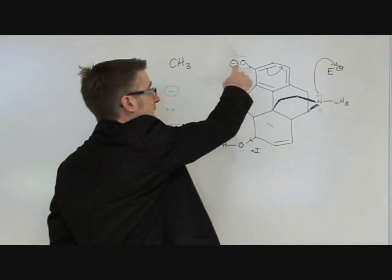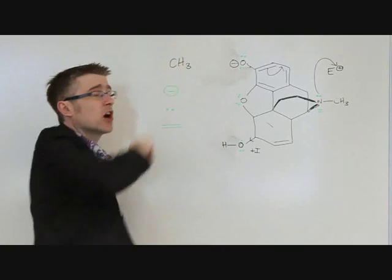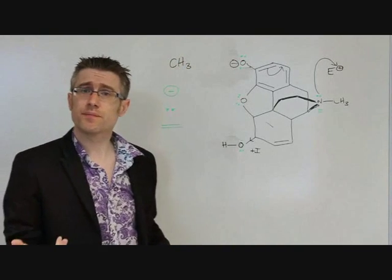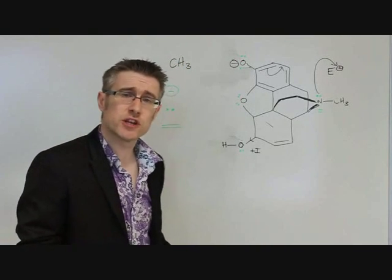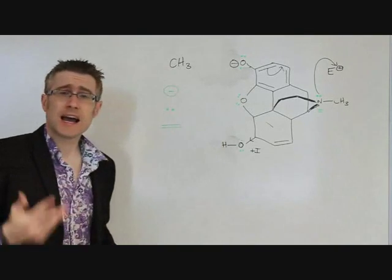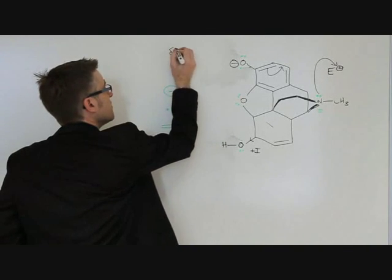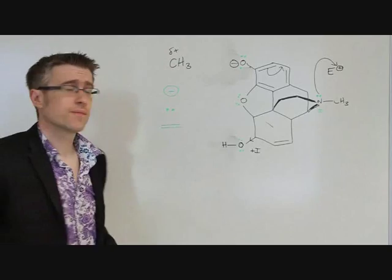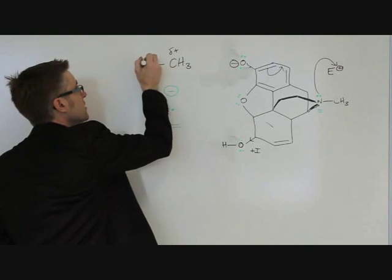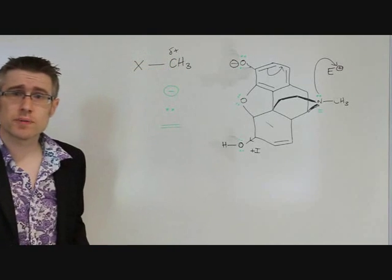Somehow, we need to make electrons flow from this negative charge towards the carbon. If we're going to achieve that, the carbon here has to have a delta positive charge. That means we need some sort of X group here.